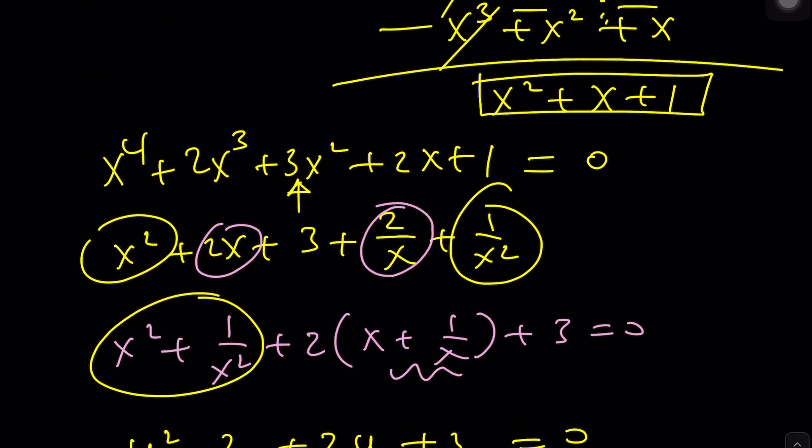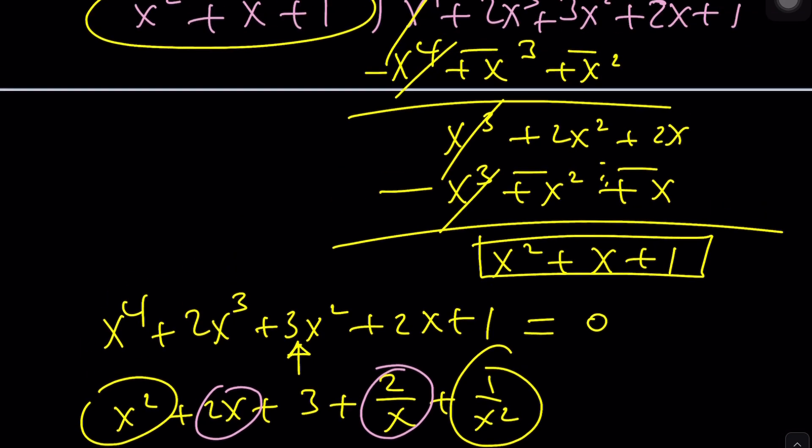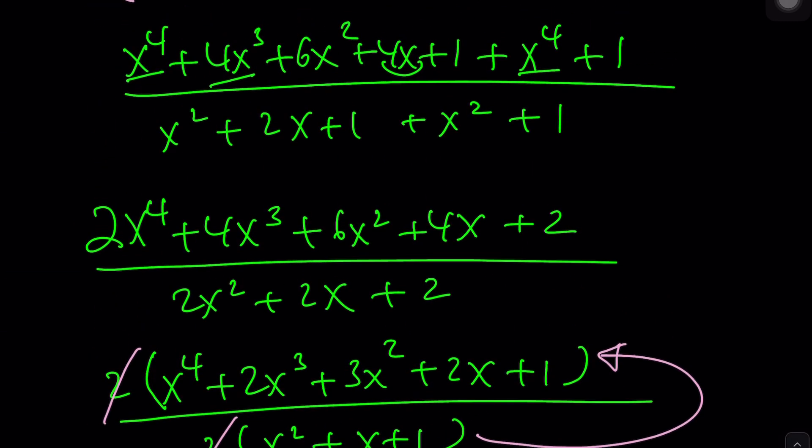Now this means we can write the numerator as (x squared plus x plus 1) squared, and the denominator as (x squared plus x plus 1), so that we can take out one of these, and that should be the answer.